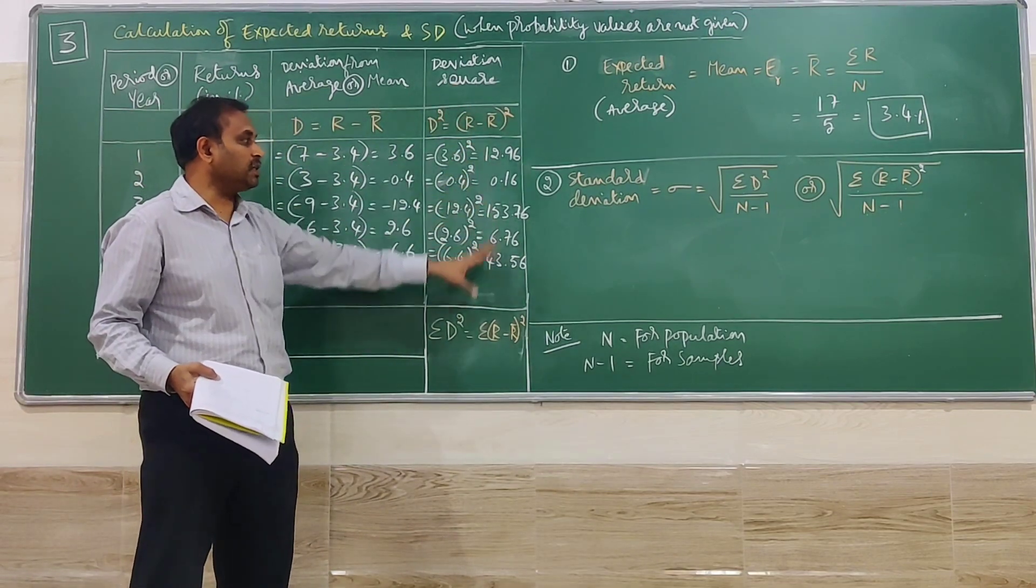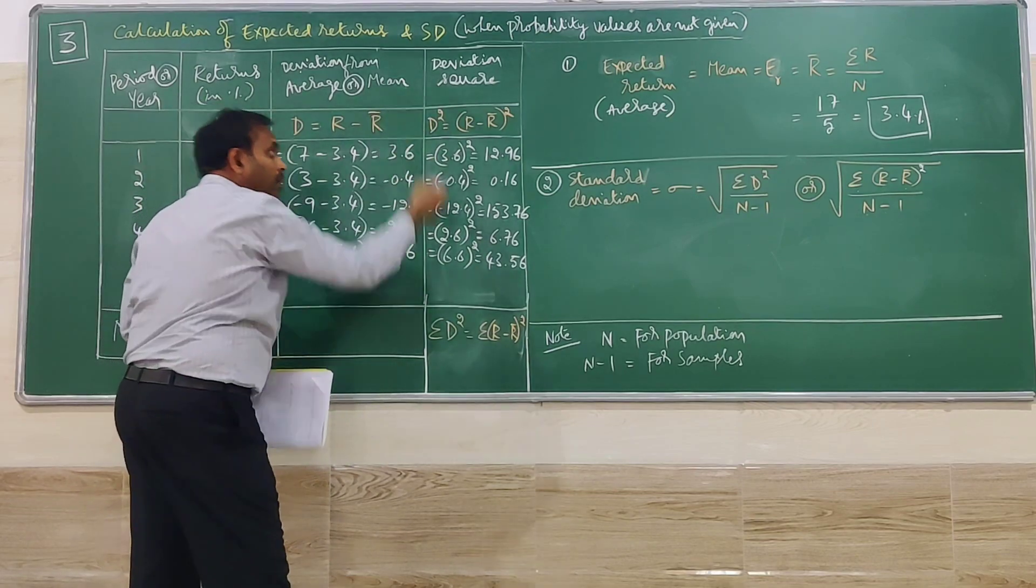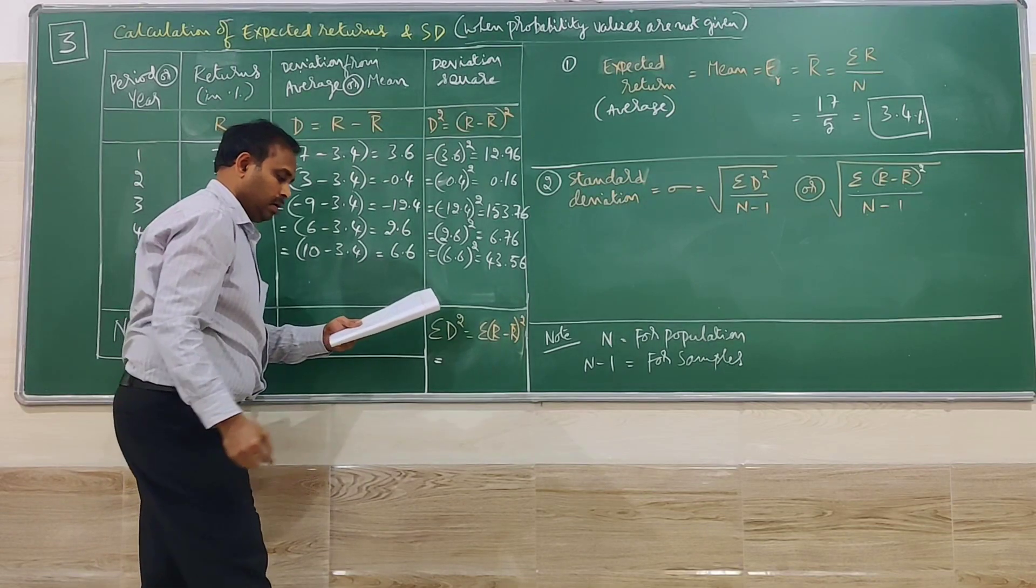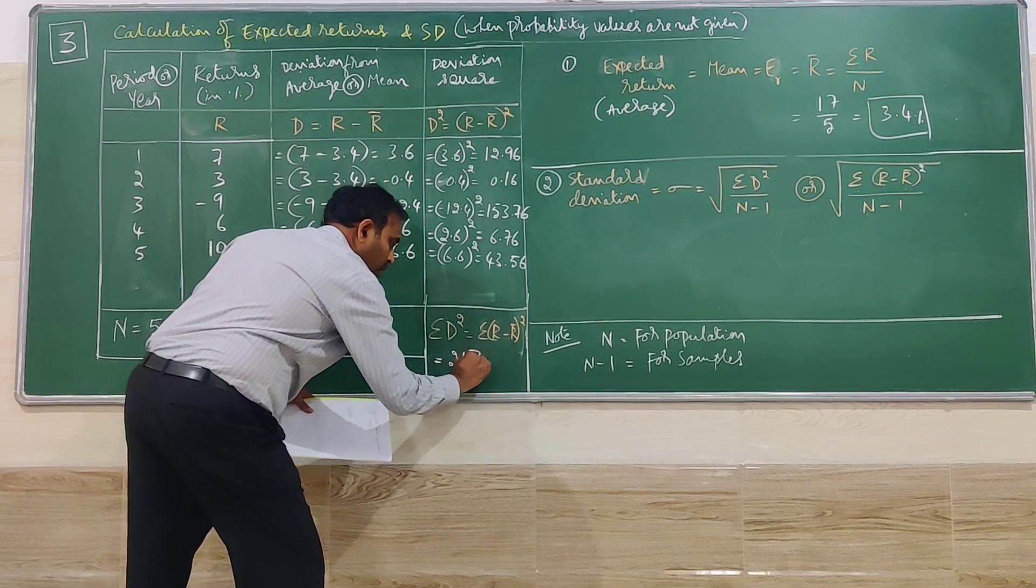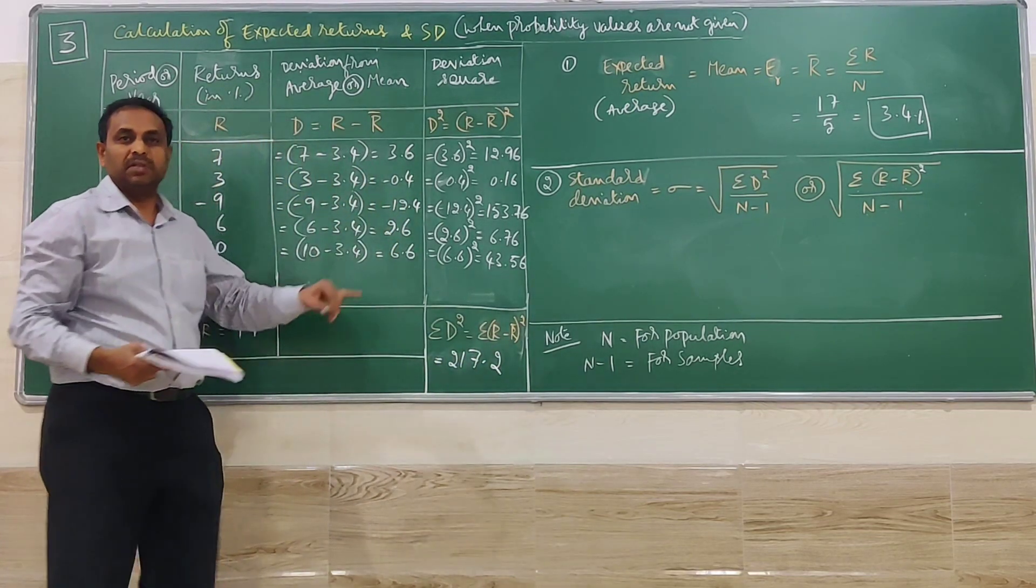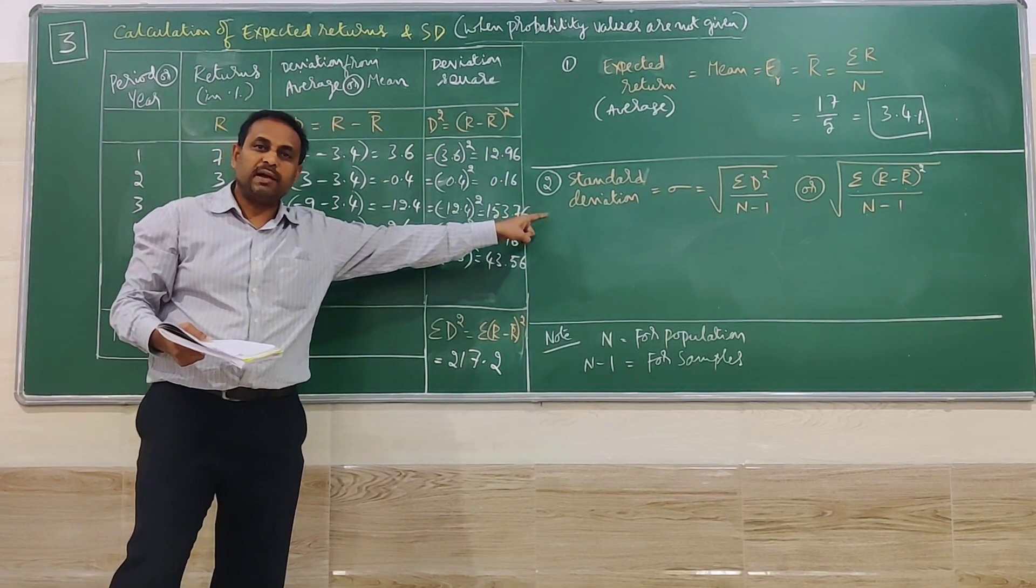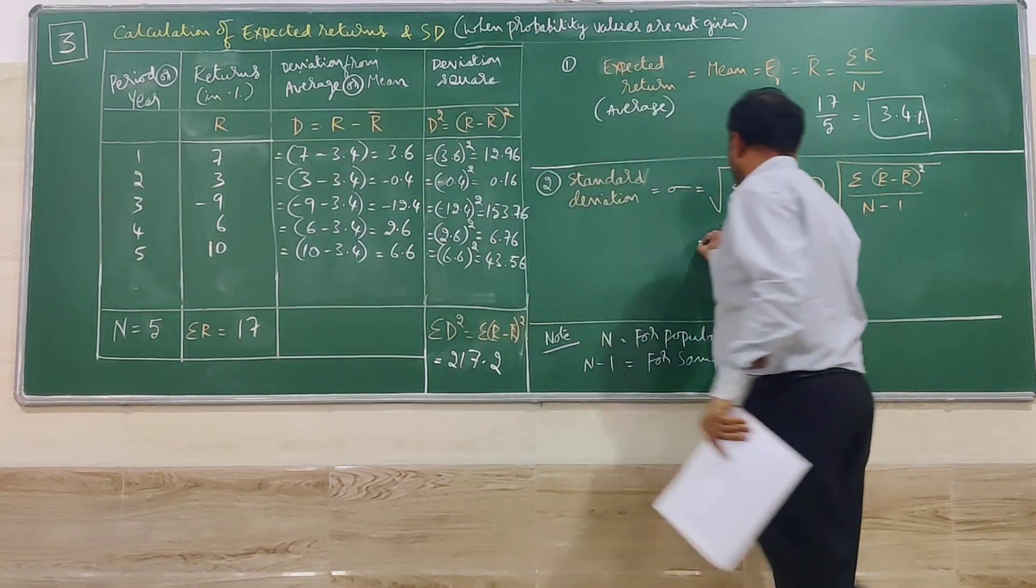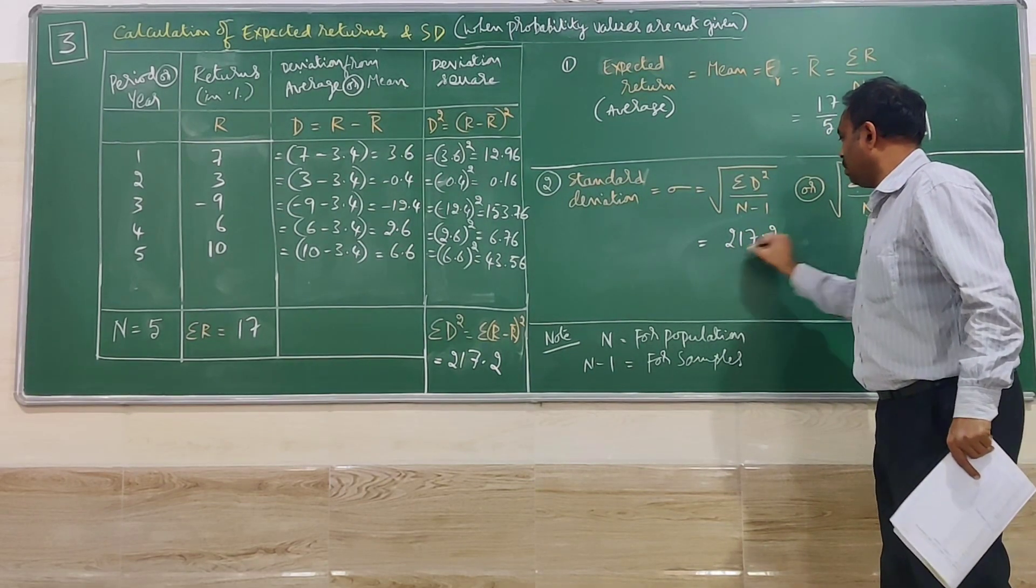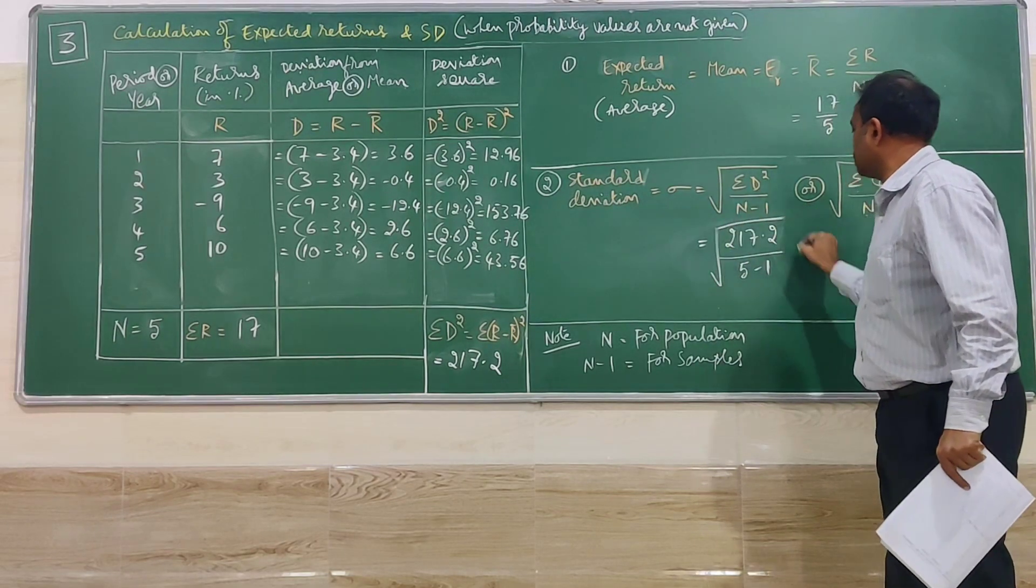Because we have done the d square, all values are positive. We have to add all these to get deviation square total. The deviation square total is 217.2. This deviation we will take for the calculation of standard deviation. The formula is summation d square: 217.2 divided by 5 minus 1, whole square root.